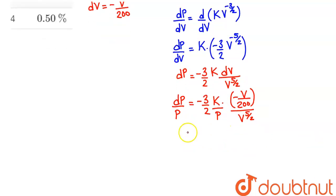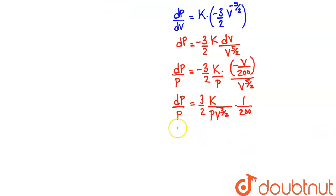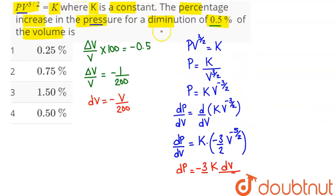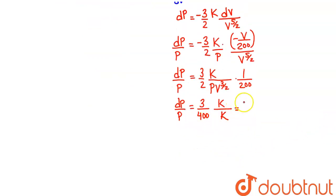Substituting dV equals minus V upon 200 and simplifying: the V terms combine — V divided by V to the power 5 by 2 gives V to the power negative 3 by 2 — and with K cancelling against P equals K into V to the power minus 3 by 2, we get DP upon P equals 3 upon 400.